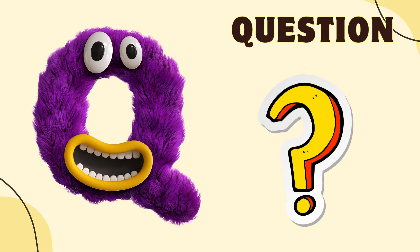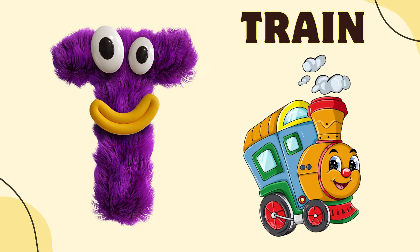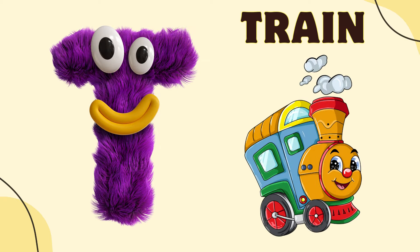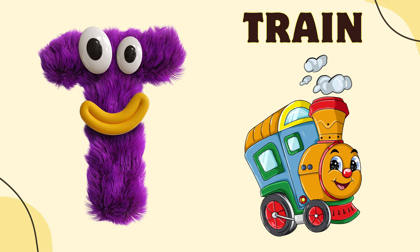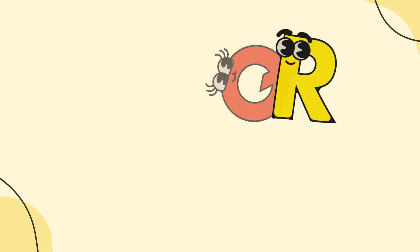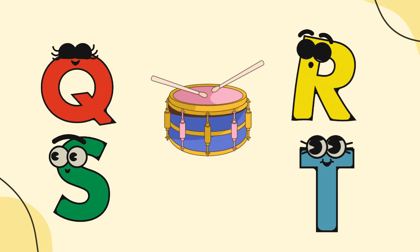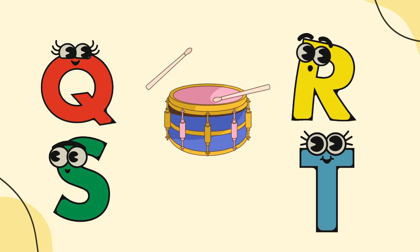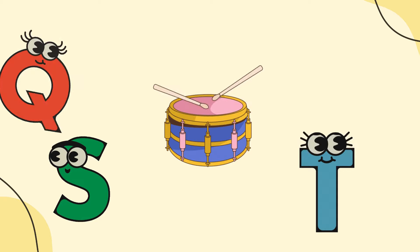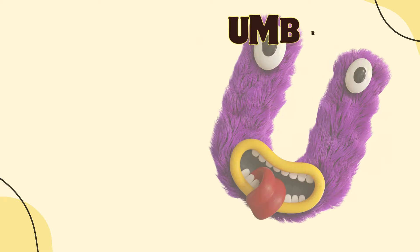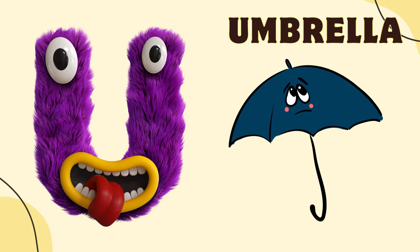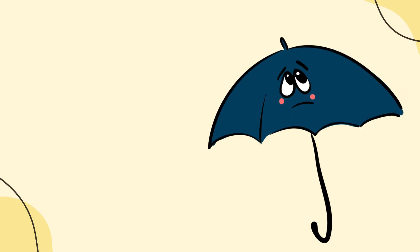S is for Sun, S-S-Sun. T is for Train, T-T-Train. U is for Umbrella, U-U-Umbrella.